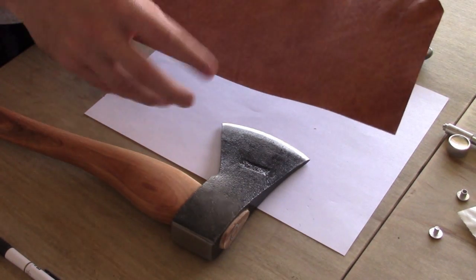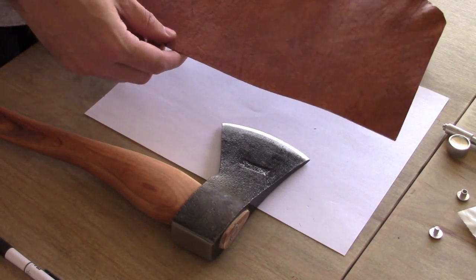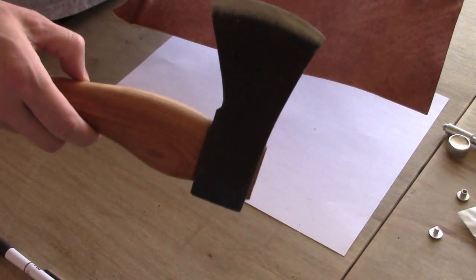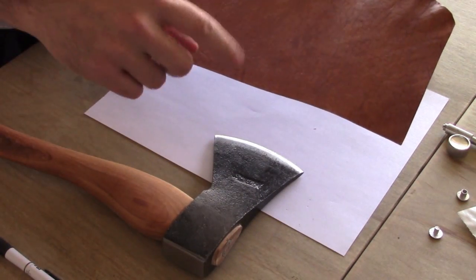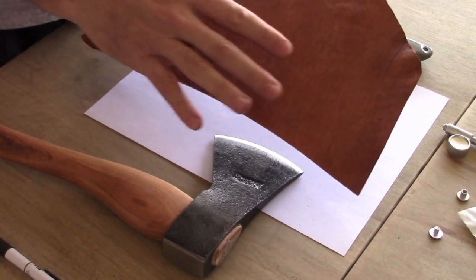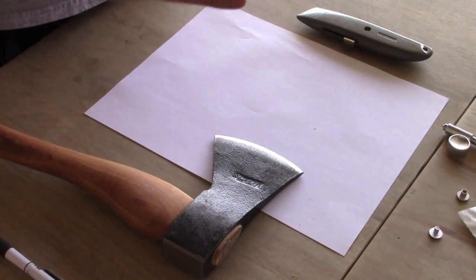Today we're going to be making our leather sheath for our Marbles Small Camp Axe. If you saw in one of our previous videos, we treated the leather which was incredibly stiff.